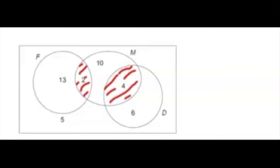The 5 is the number of students that study none of the three subjects. We want the probability of the student studying two subjects — that is the red region, the 2 and the 4, which totals 6. There were 40 students altogether, so the probability is 6 out of 40, or 3 out of 20.